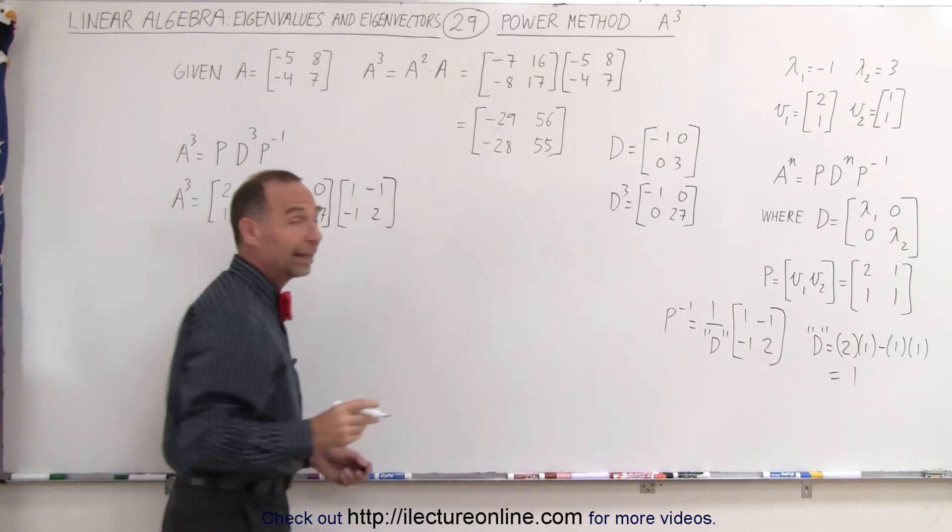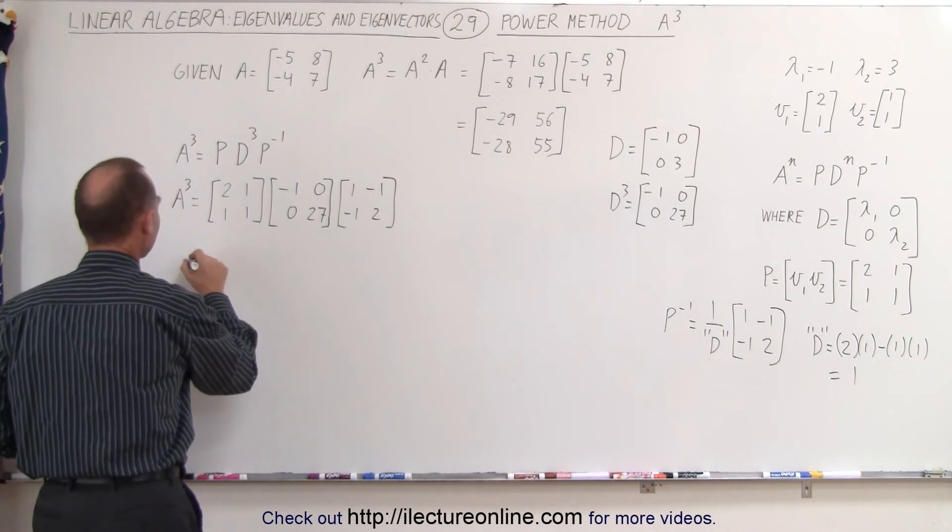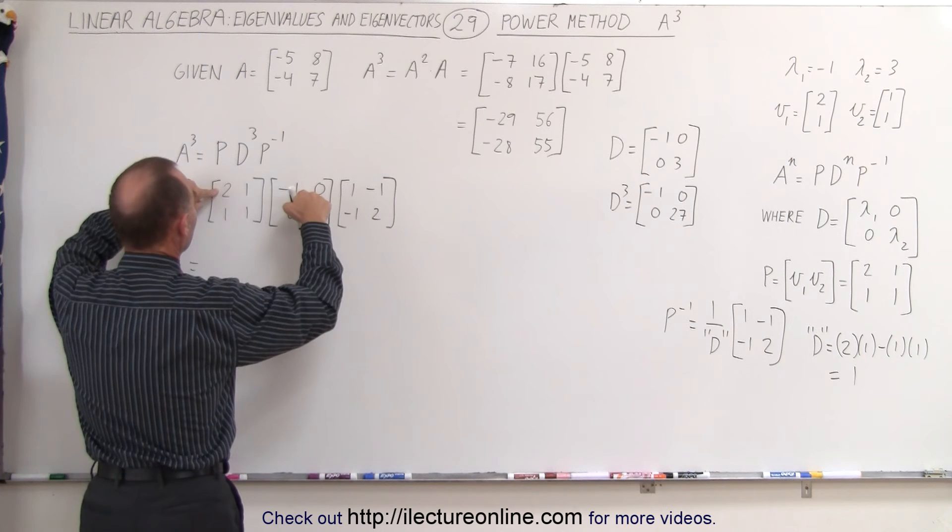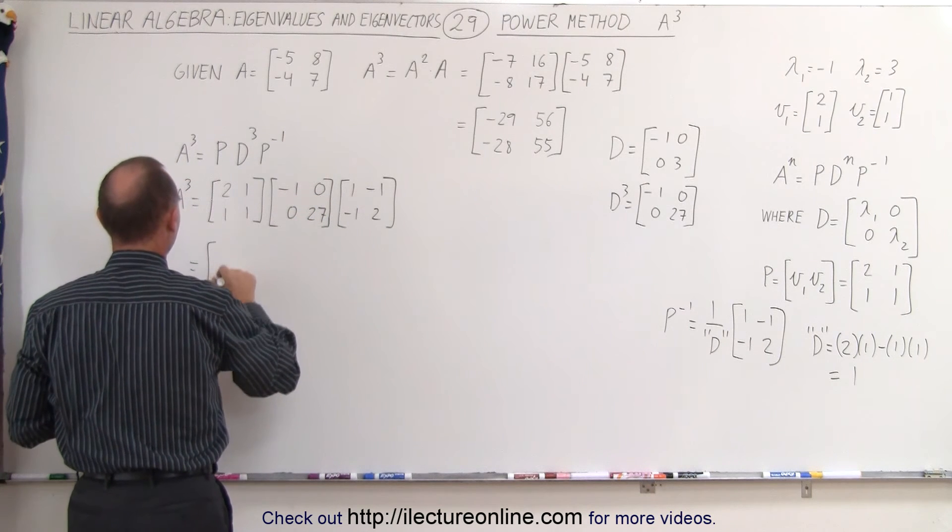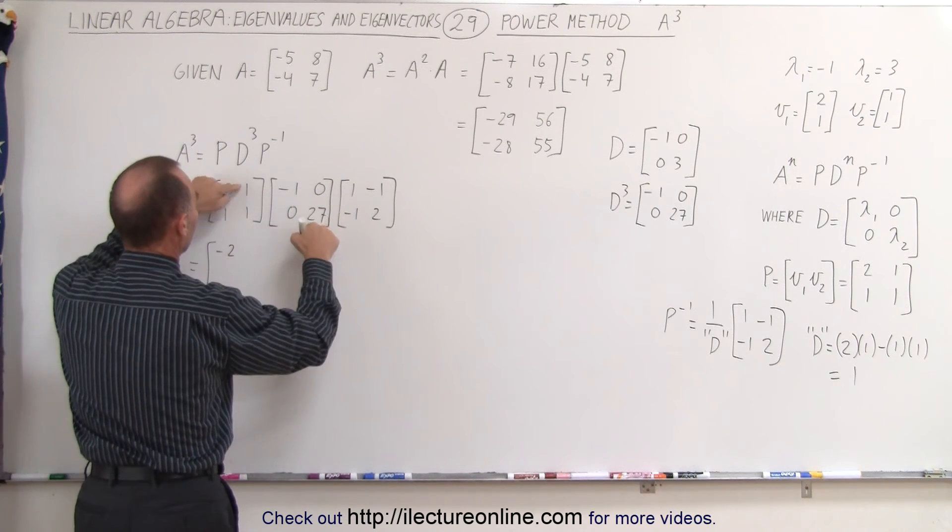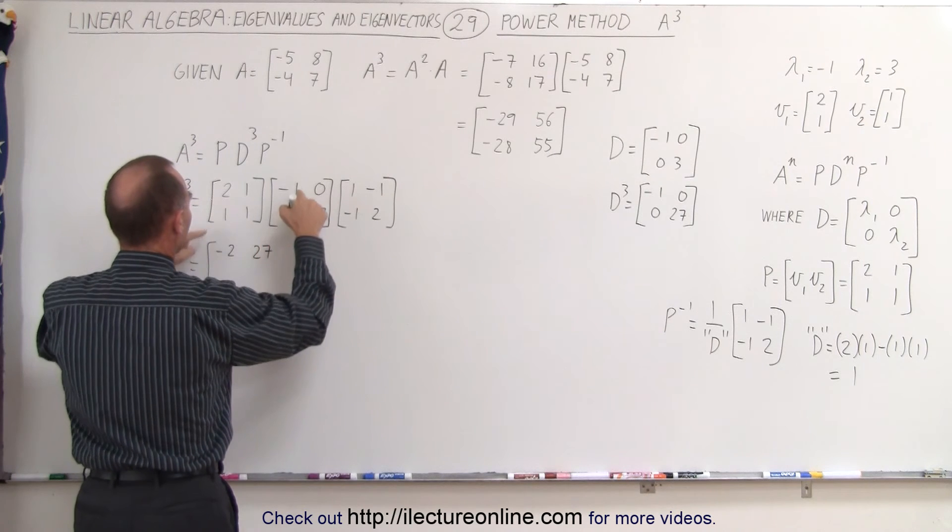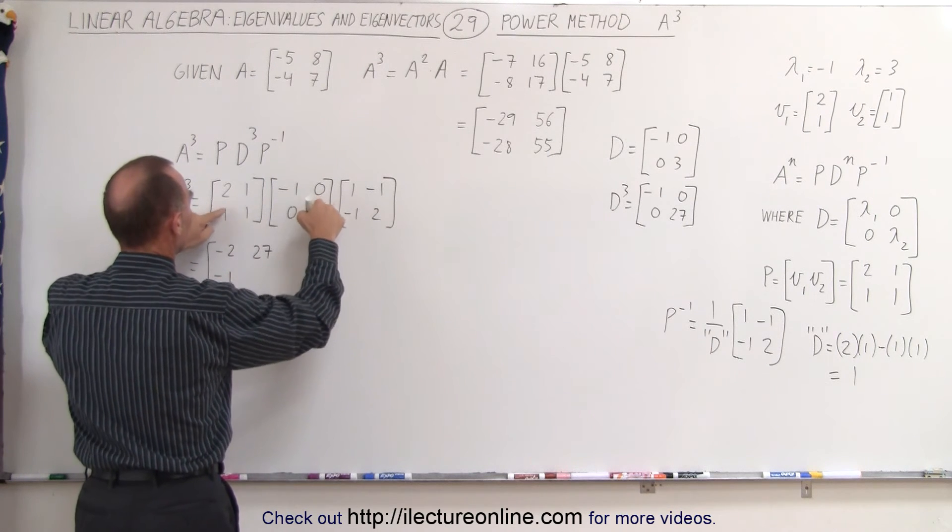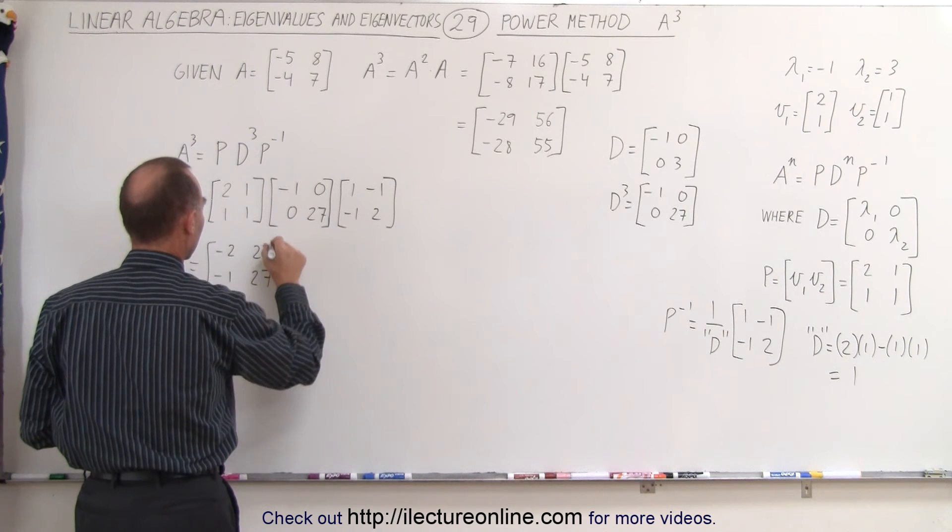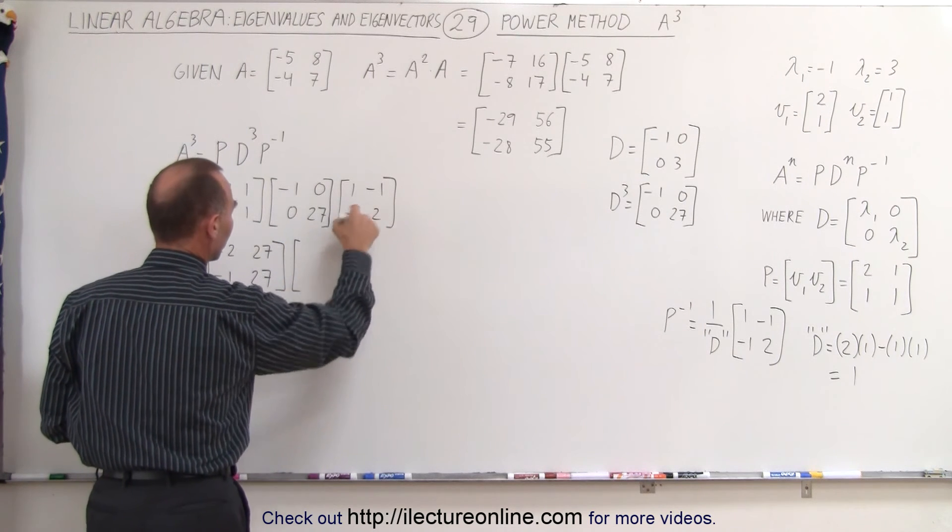And now we go ahead and multiply these together and see what we get. That's negative 2 plus 0. 0 plus 27. Negative 1 plus 0. And 0 plus 27. And now we multiply that times the third matrix.